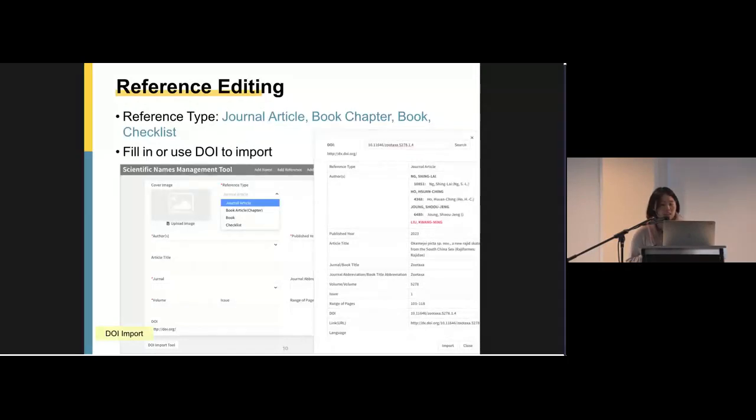As for reference editing, the form will also vary by the type chosen or the reference type. Now we have four types of references, including journal article, book chapter, book, and checklist. The checklist is for informal references, like thesis, research report, and checklist announced by experts or academic association. Sometimes we still need to accommodate these kinds of references for protocol using. And because there are so many fields to fill, we provide an import tool to get bibliography or a reference by using DOI.